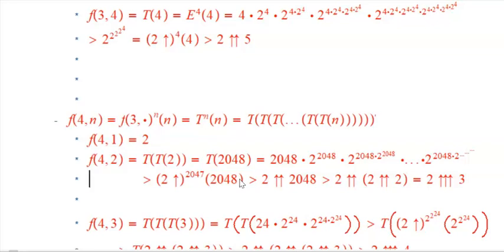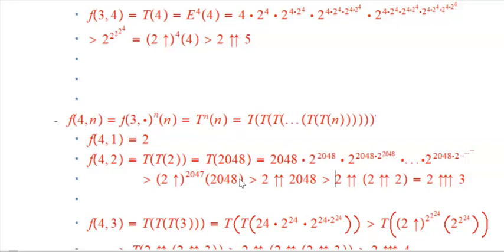But the main thing we need to know is that we took the operation T — the double-exponential operation — and then iterated that. So we get this iterated exponential, and then iterate that. And that's a pretty big thing.